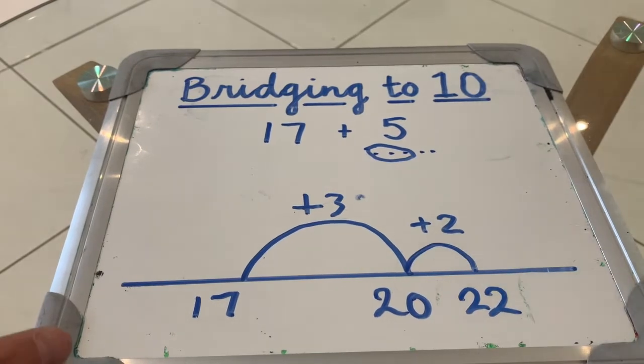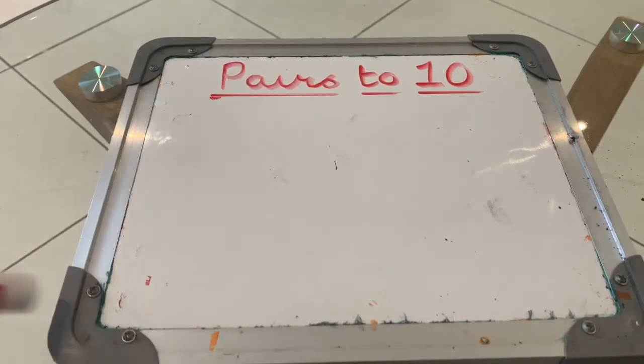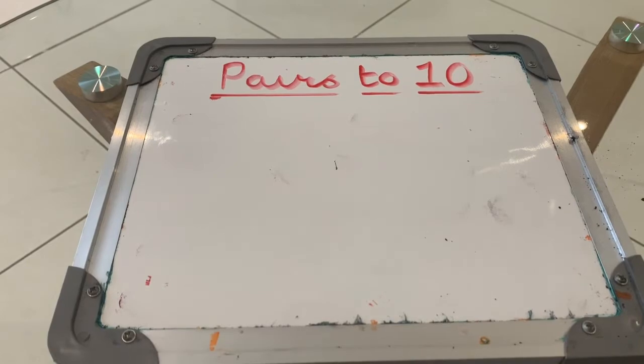If you find that skill difficult, you might need to go back and practice your pairs to 10. Knowing your pairs to 10 is very important for being able to bridge to the next 10 so that you know how many more you need to add to get to 10. Let's have a look at the pairs to 10.